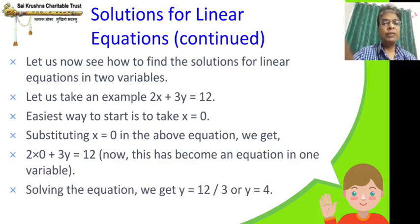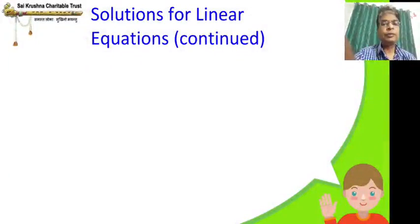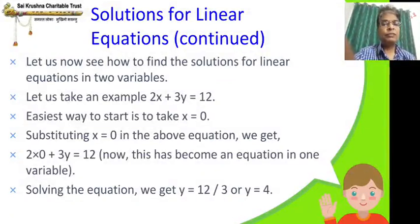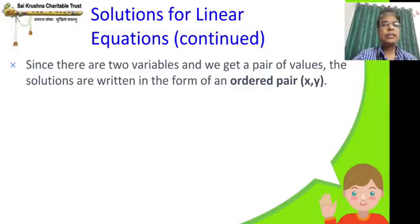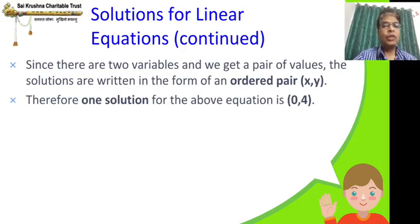Solving this equation: y equal to 12 divided by 3, so y equal to 4. We divided 12 by 3 and got the answer 4. Since there are two variables, we get a pair of values, and solutions are written as an ordered pair — x comma y. Therefore, one solution for the equation 2x plus 3y equal to 12 is 0 comma 4.